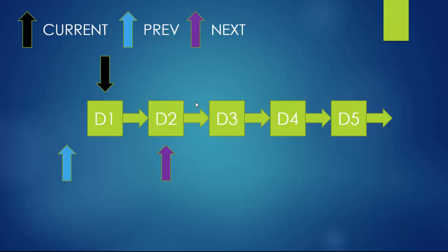The next step is to deal with the pointer going from d1 to d2 — you need to alter that pointer. A node contains a data field and a pointer field, and it's the pointer field you're changing. You're not physically moving d1 to the position of d5; you're just altering the pointers. Currently prev is null, so d1's next pointer, which was pointing to d2, now points to prev (null).